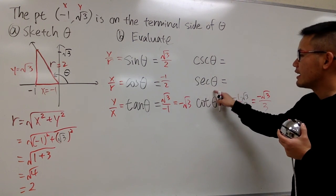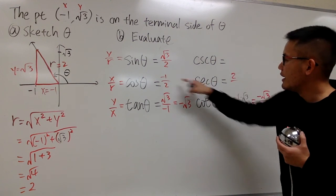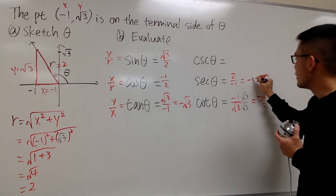Next one. Secant theta is the reciprocal of this, which is 2 over negative 1, which we reduce that to negative 2.